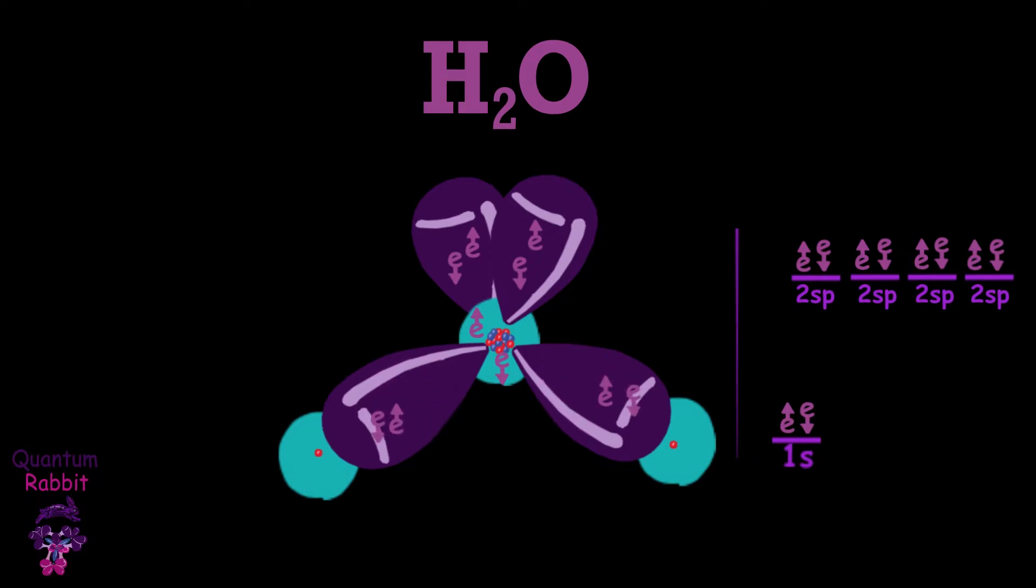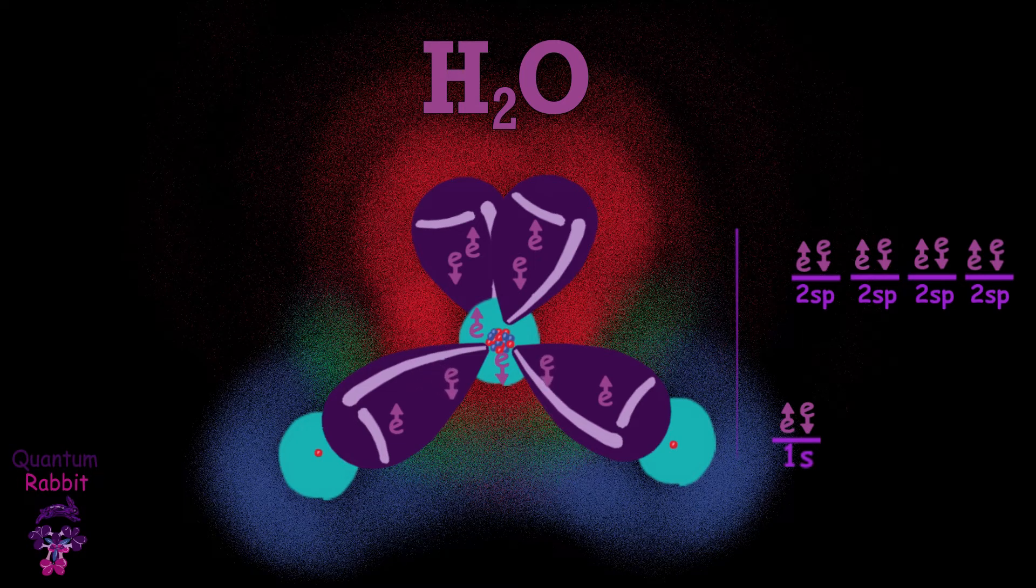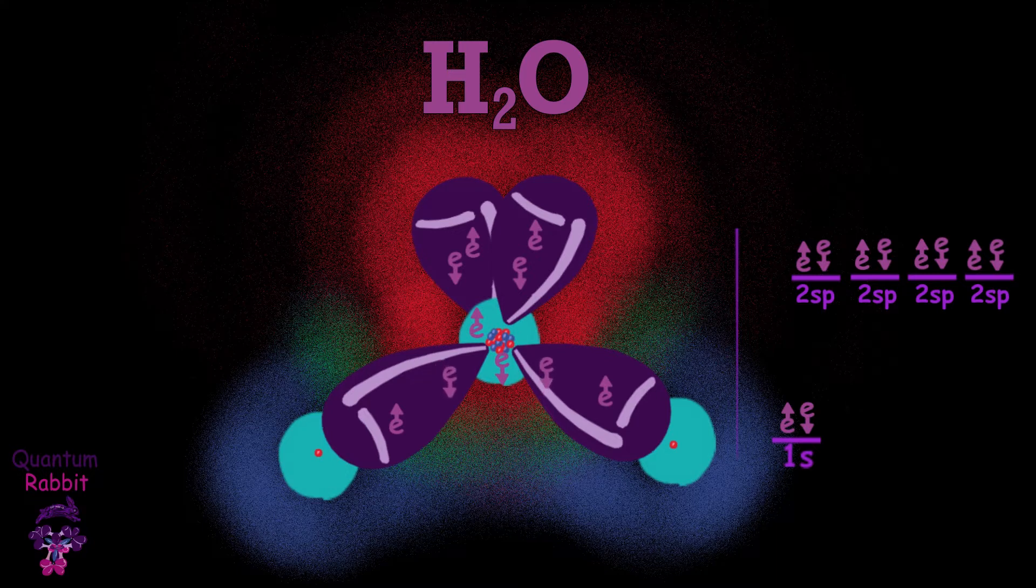By containing eight protons and occasionally up to 10 electrons, it gives the oxygen atom a negative electrical charge. And the hydrogens, with a proton and occasionally zero electrons, have a positive electrical charge.